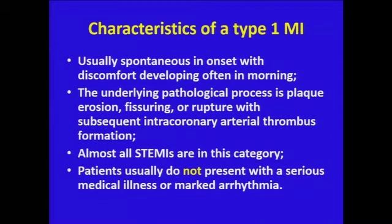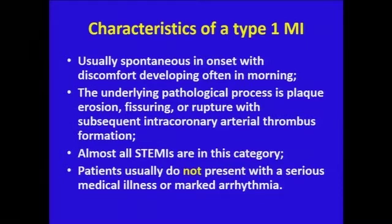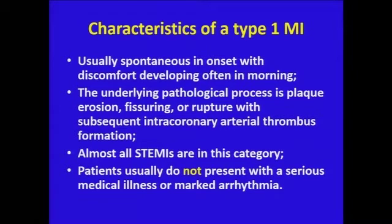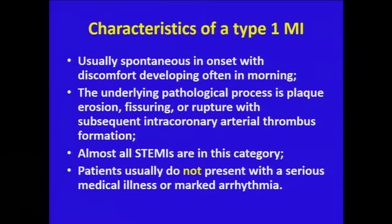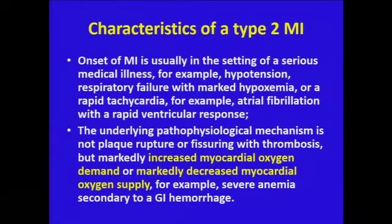The characteristics to remember clinically: a Type 1 MI is usually spontaneous in onset. The discomfort often develops in the early morning hours, as shown in epidemiologic studies of acute MI. The underlying pathological process is plaque erosion, fissuring, and thrombosis in the artery. Almost all STEMIs are in this category, and the patients usually do not present with a serious medical illness, marked arrhythmia, hypotension, or hypertension — in other words, a supply-demand problem.